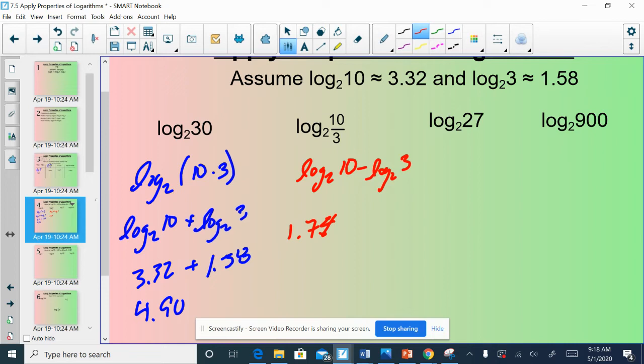27 is 3 to the third power. So, I could rewrite this as log base 2 of 3 to the third. Now, that exponent could be written out front. 3 times log base 2 of 3. I happen to know what log base 2 of 3 is. It's 1.58. So, I can do 3 times 1.58 and get 4.74.